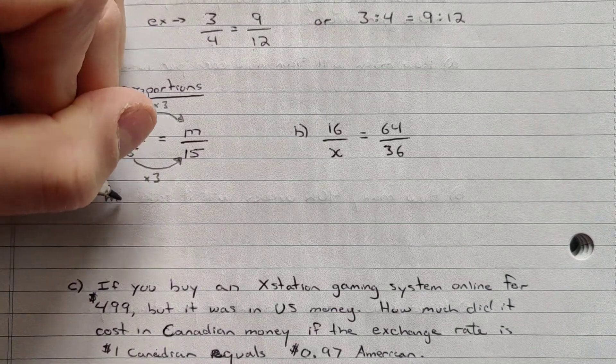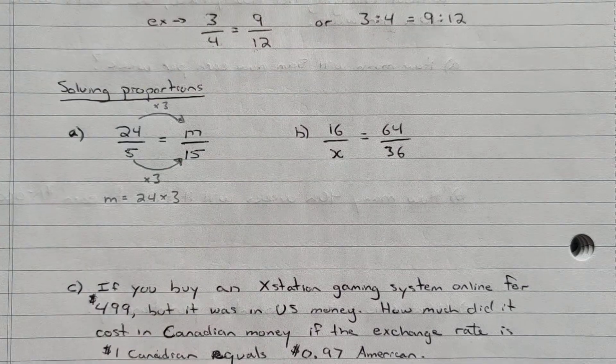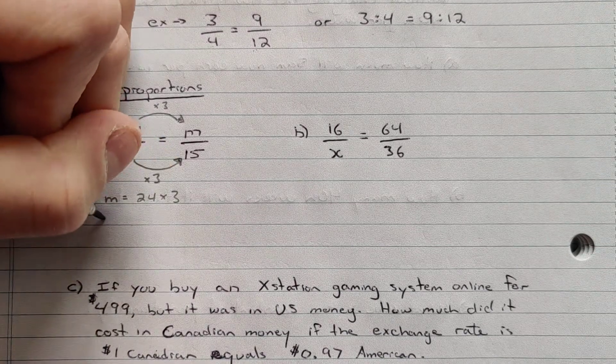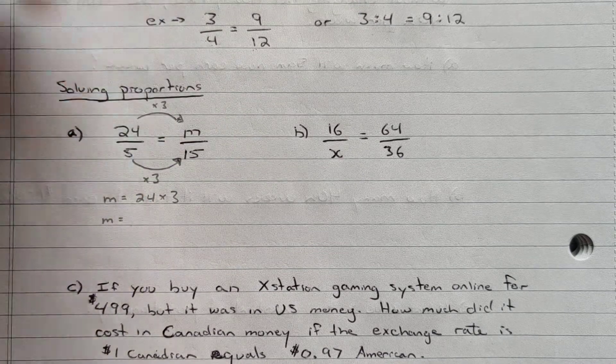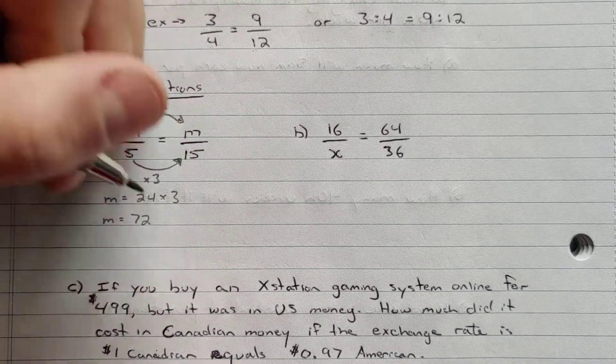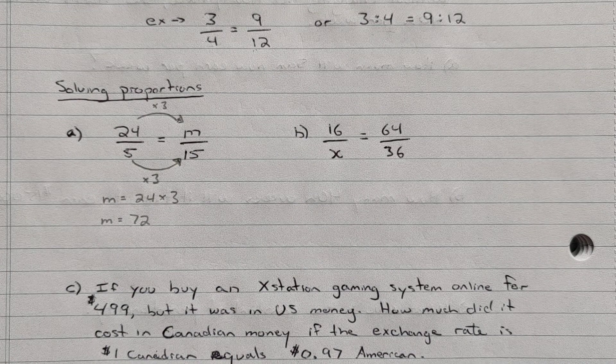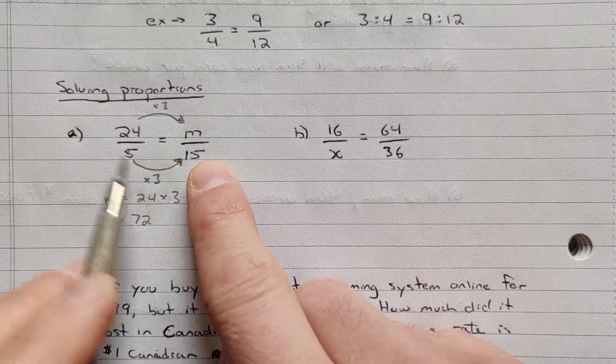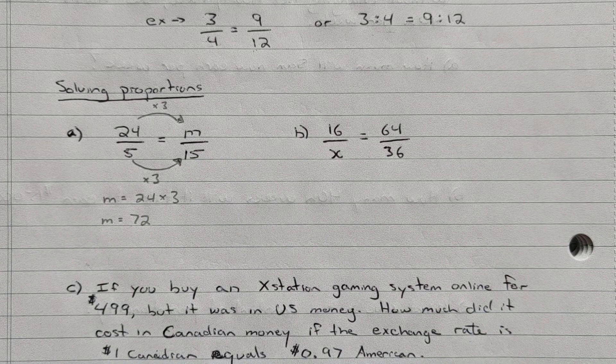So M equals 24 times 3. 24 times 3 is going to give us 12 and 60 is 72. So M is 72 in this case. So one way to do it is to actually take a look and see what's it take to go from 5 to 15. 15 divided by 5 is 3. So if we multiply 5 by 3 we get 15. So that's one way of solving them.